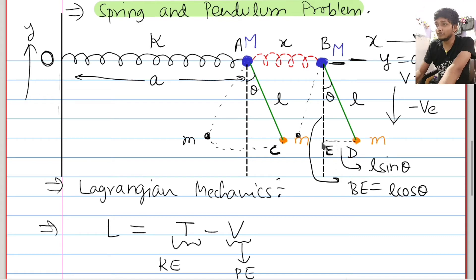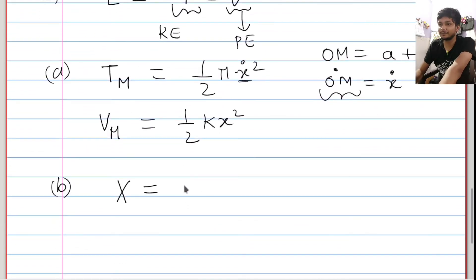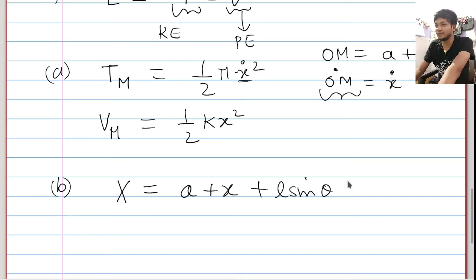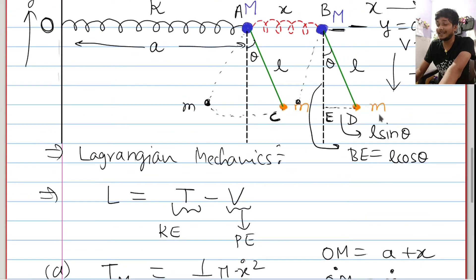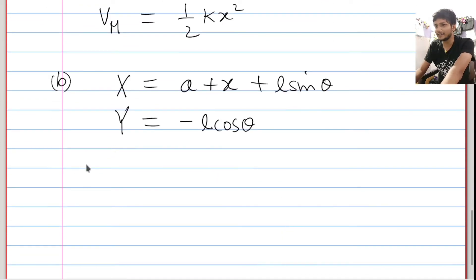So capital X equals (a + x + L sin theta) — this will be the position of mass m in the x direction. And since y equals 0 is taken as reference and we are moving downward, the y position capital Y will be minus L cos theta.